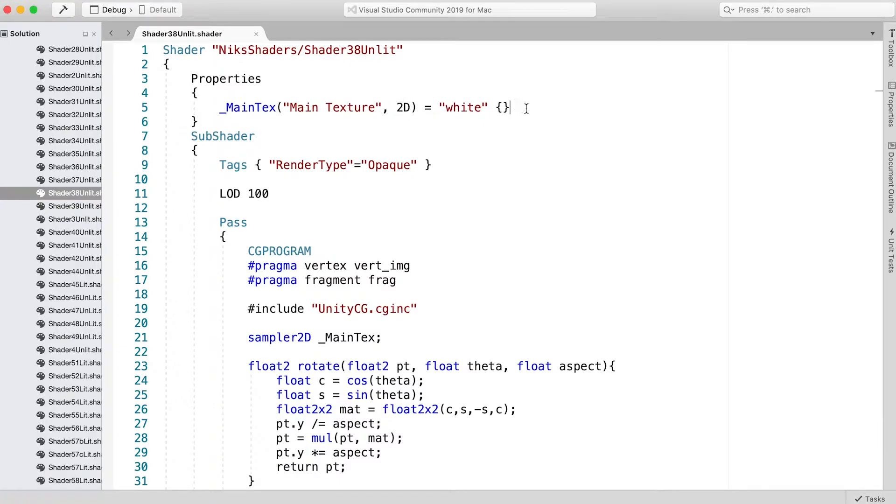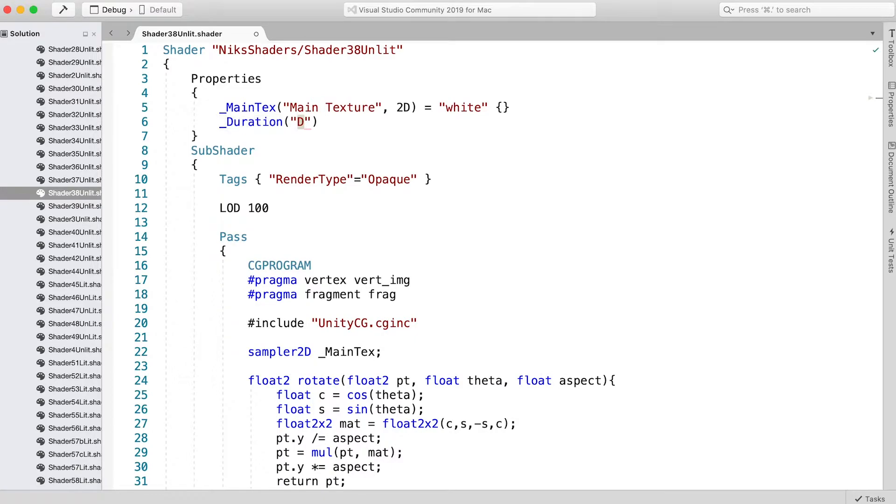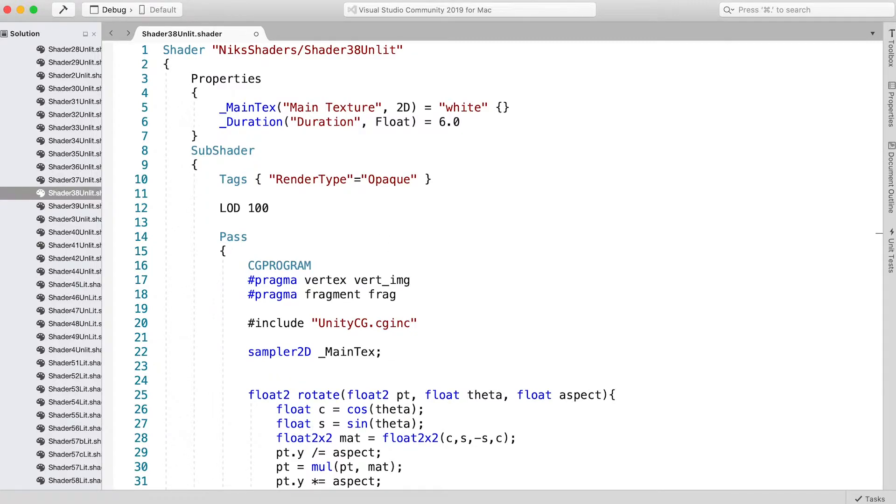Slide up to the properties section and enter _Duration("Duration", Float) = 6.0. And just below the sampler2D line, add float _Duration.